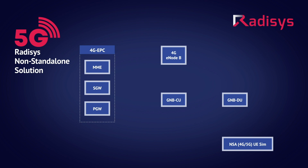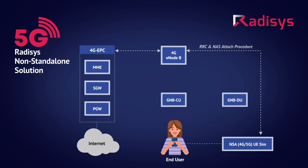When a 5G NSA UE is activated, the UE performs the RRC and NAS registration procedures towards the 4G E-node B and successfully attaches to the network. The UE gets an IP address and accesses the data network services. In the course of this setup procedure, the E-node B triggers the secondary 5G gNode B node addition based on the UE capabilities and enables the secondary 5G gNode B into the system.